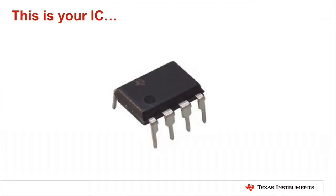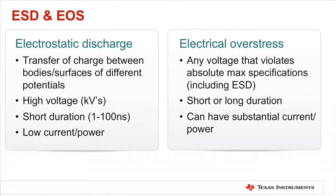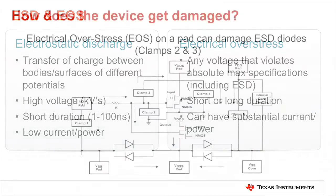This is your new and pristine TI IC, and this is your IC after it's been exposed to EOS, or electrical overstress. EOS refers to any voltage or current that violates the absolute maximum specifications for a given device. Typically, the root cause of EOS damage is triggered by a device's ESD protection cells, which are intended to handle low power events.